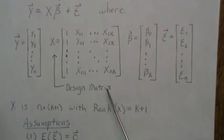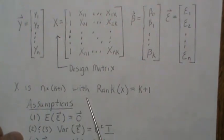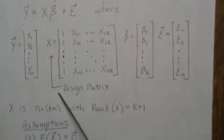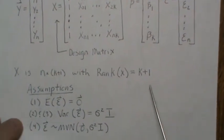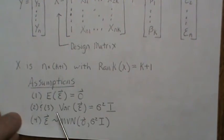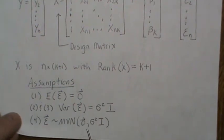So the assumptions in matrix notation: first, x is an n by k plus 1 design matrix and it has rank k plus 1. So that's what's called full column rank. There's more rows than there are columns. The assumptions are that the epsilon vector has mean zero vector. Two and three above is that the variance of epsilon is sigma squared times i. So that means it's a constant variance down the diagonal, but all the off diagonals or the covariances are zero. And assumption four for normality is that the epsilon vector is multivariate normal with mean 0 and variance covariance matrix sigma squared times i.